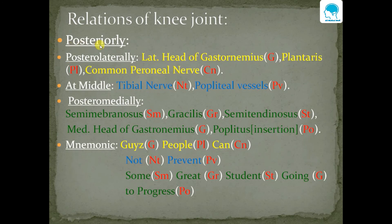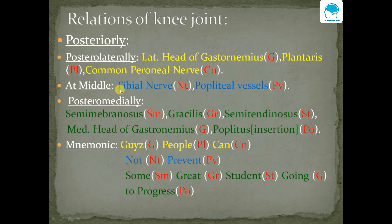On the posterior aspect there are three regions. On the posterolateral aspect there are three structures: lateral head of gastrocnemius, plantaris muscle, and common peroneal nerve. In the middle there are tibial nerve and popliteus muscle. Posteromedially there are semimembranosus, gracilis, semitendinosus, medial head of gastrocnemius, and popliteus muscle insertion.